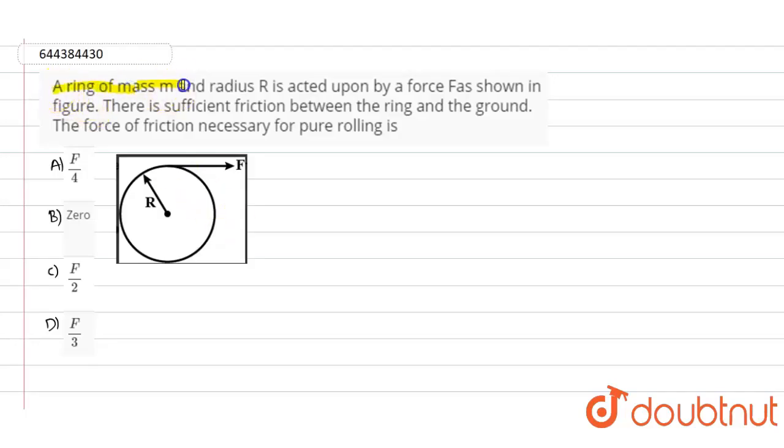So here in this question, it is given that a ring of mass m and radius capital R is acted upon by a force as shown in this figure. There is sufficient friction between the ring and the ground. The force of friction necessary for pure rolling is...